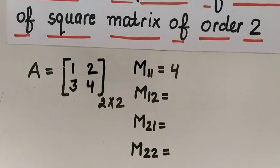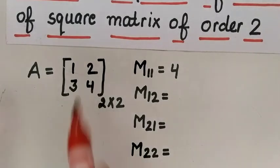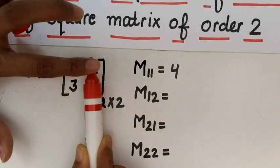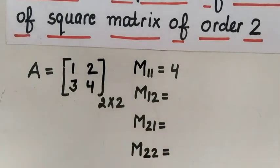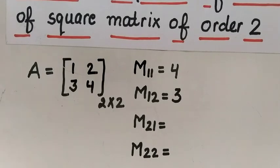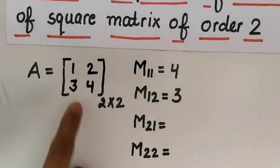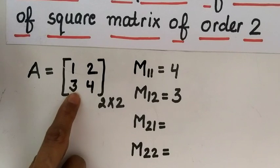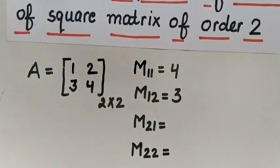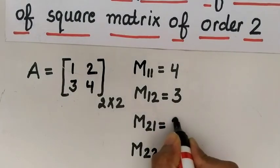Similarly we find M12: minor of a12. Element a12 is 2. We delete its corresponding row and column, and the remaining element is 3. So M12 equals 3. For M21, we delete the row and column of a21 and the remaining element is 2, so M21 equals 2.